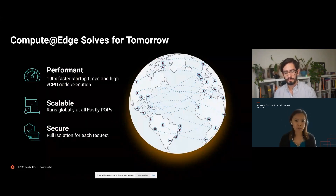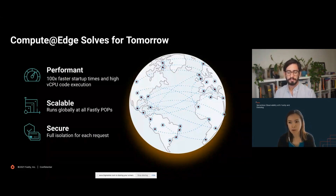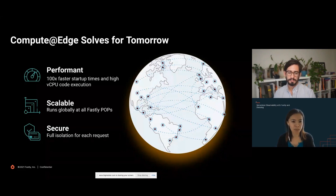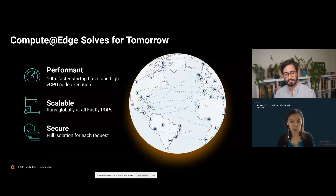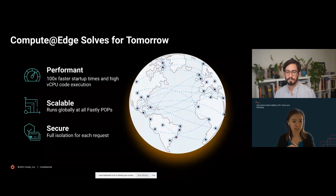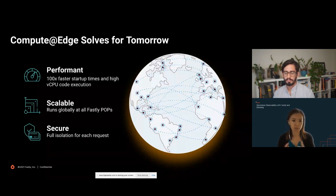Here's where Compute Edge differentiates against other serverless edge platforms. Compute Edge has virtually eliminated cold-start times with our WebAssembly technology — a highly performant platform with super fast startup times. When you deploy on Fastly, you're deploying globally to all of Fastly's POPs. Our WebAssembly isolation technology means you can instantiate, quickly spin up, and destroy instances within a secure sandbox boundary, greatly reducing vulnerability to security attacks and improving your overall security posture.